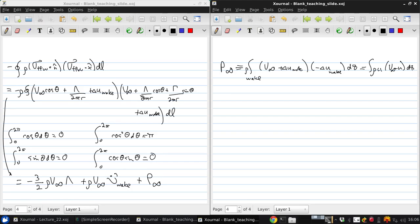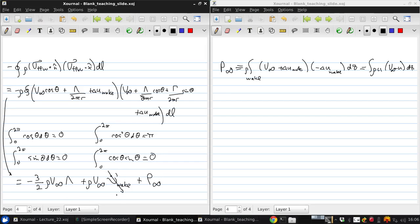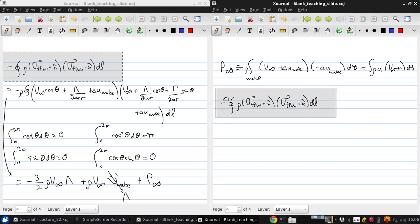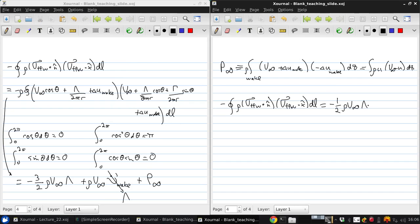Further we showed earlier that this volume flow rate in the wake is just equal to the source strength, so that this integral is simply negative one half rho V infinity lambda plus the far field momentum defect.